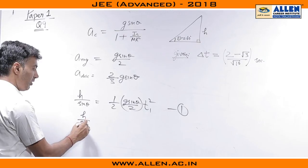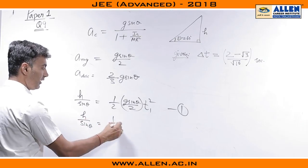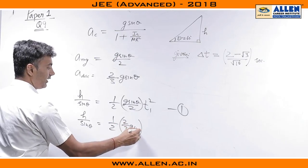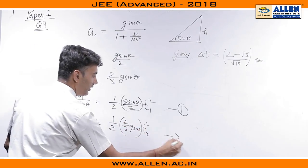Similarly, for the second body, we will have h by sin theta equals half 2 by 3 g sin theta t2 square.